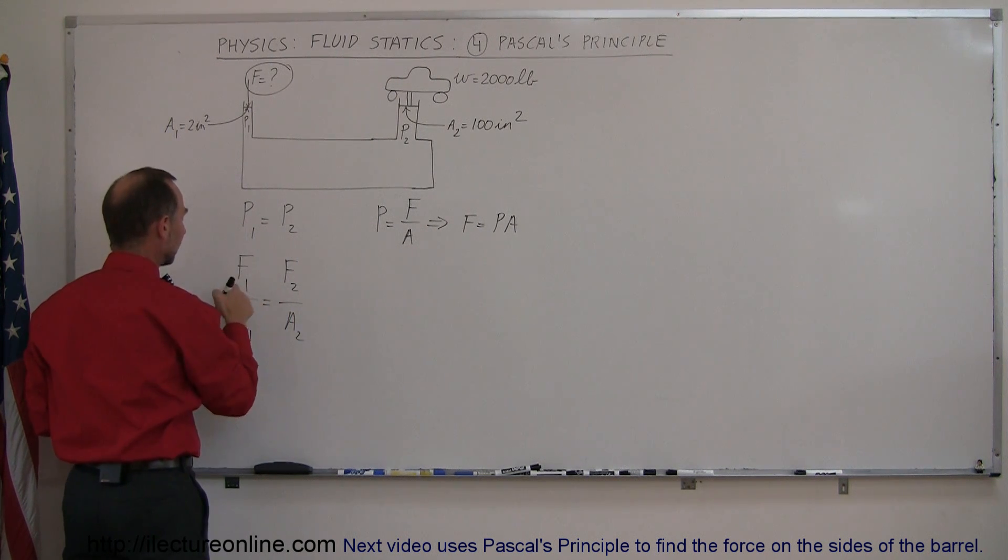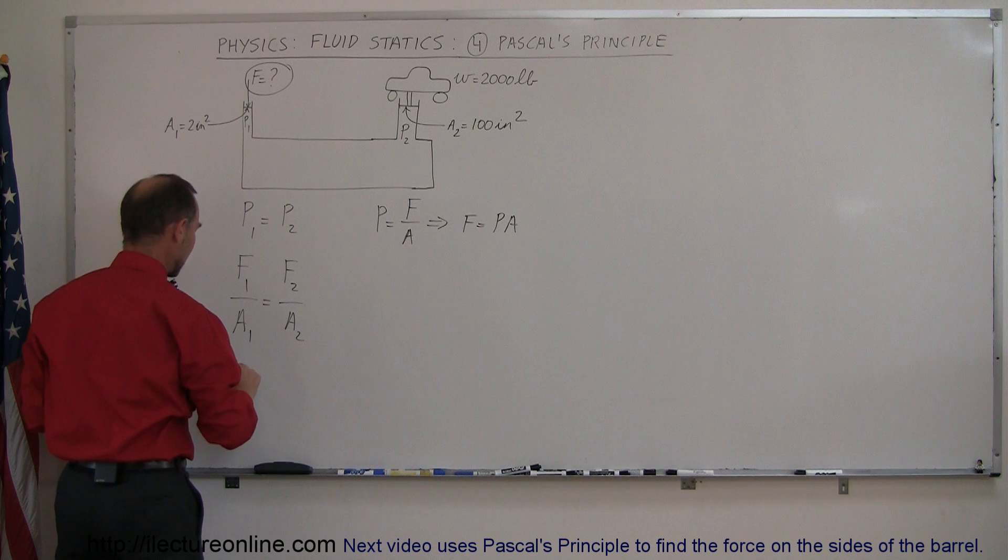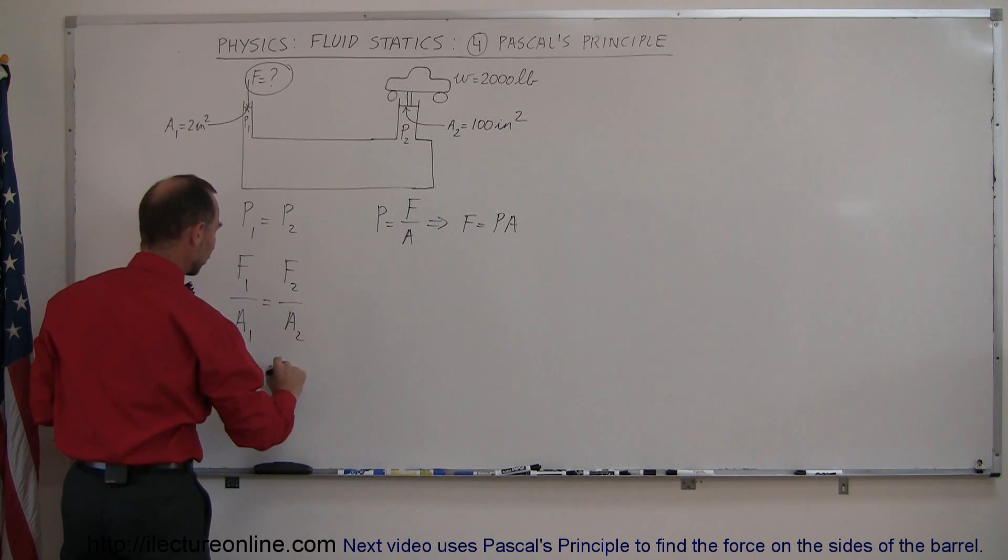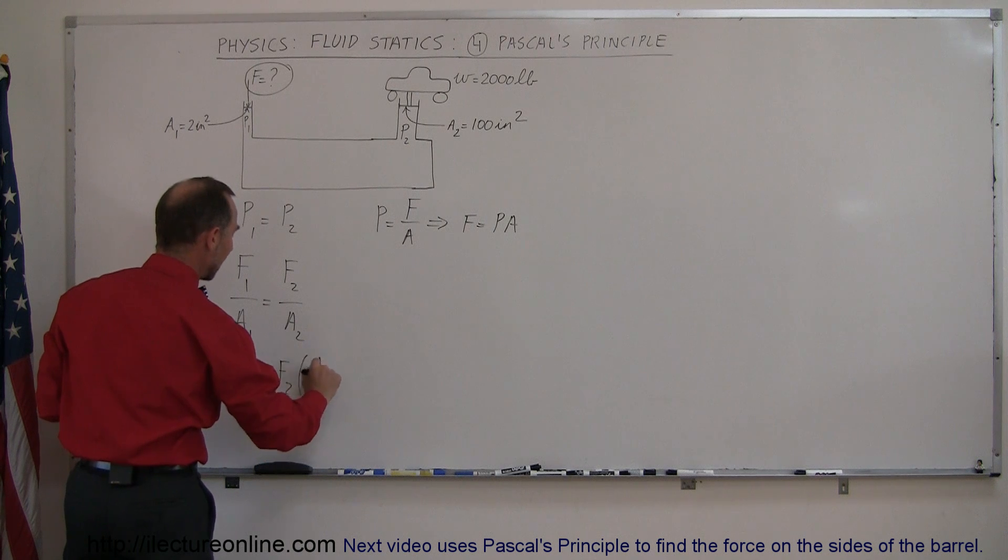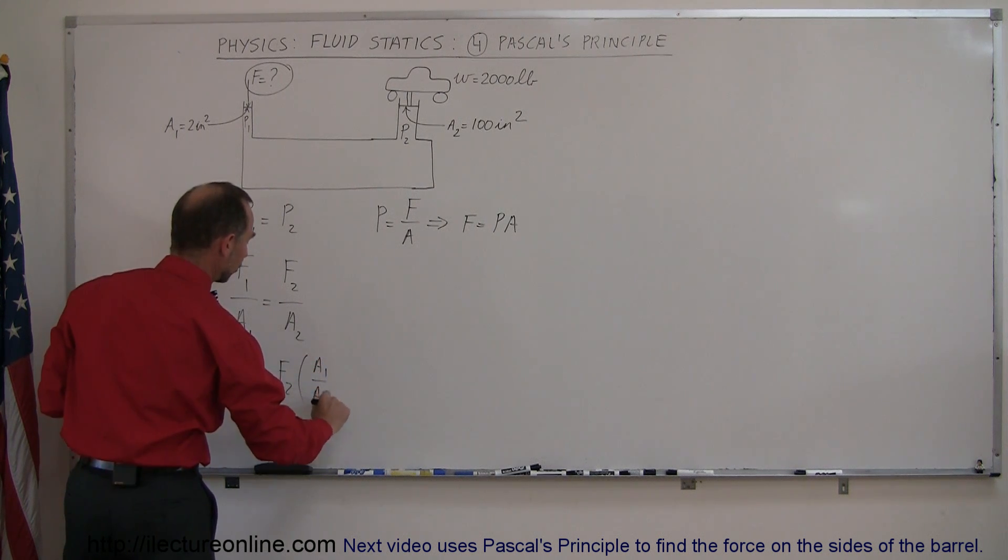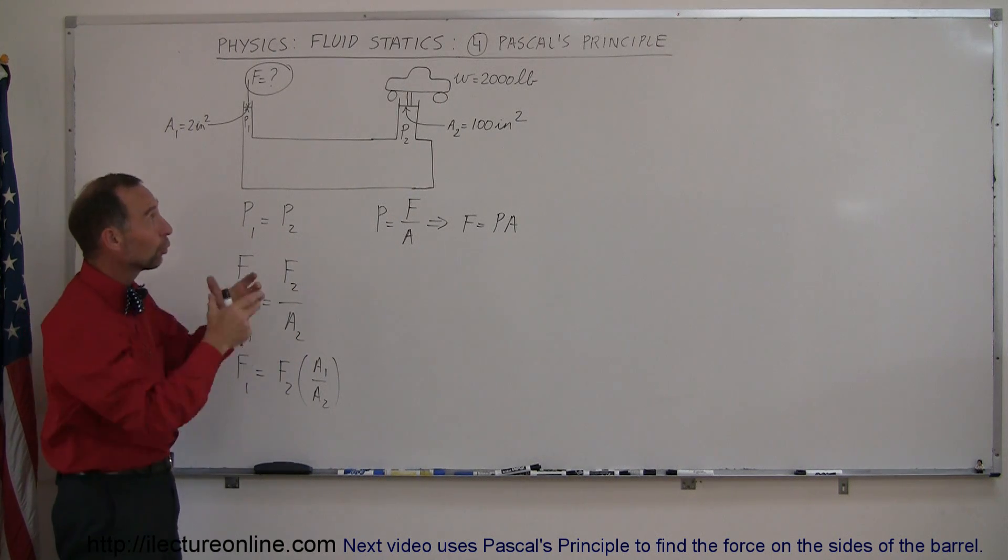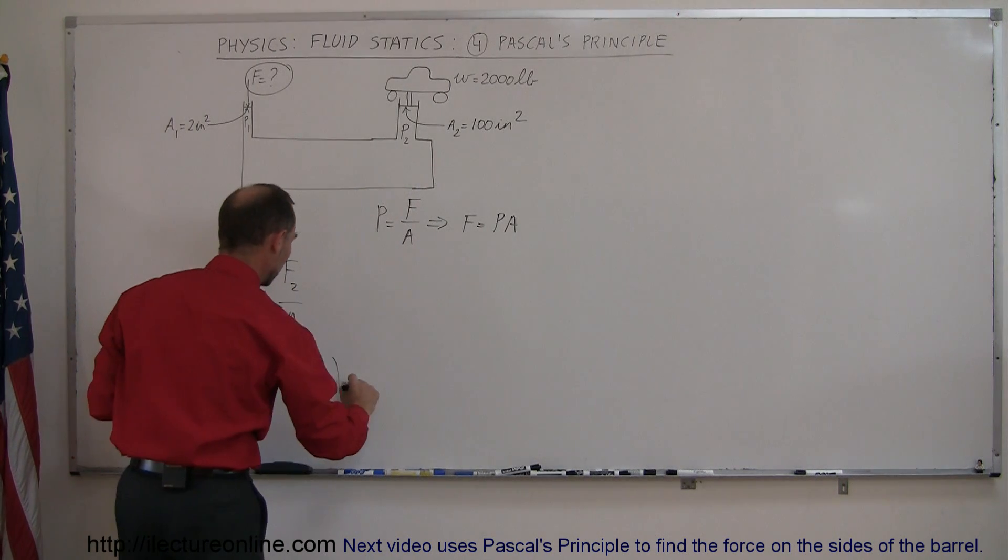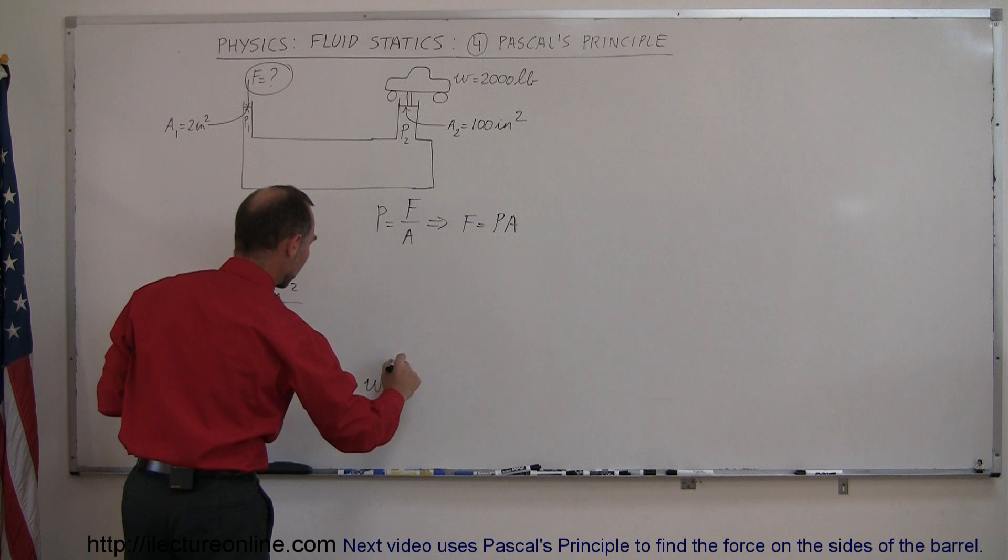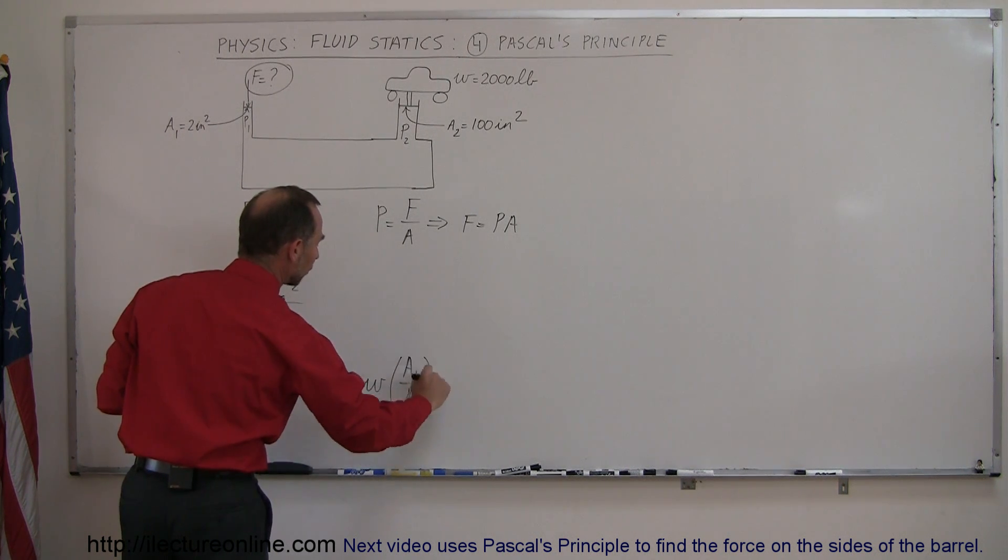And since we're looking for F1, we'll then go ahead and bring A1 over here. So the force at 1 is equal to the force at 2 times A1 over A2. Now what is the force over here? The force over there is of course equal to the weight of the car. So this can be written as the weight of the car times the ratio of the cross-sectional areas of the two pistons.